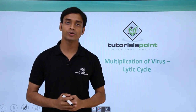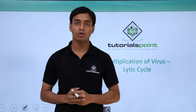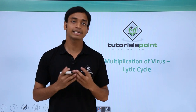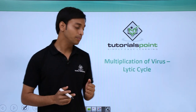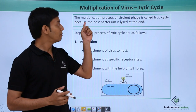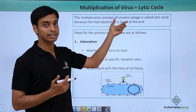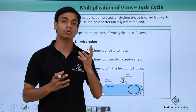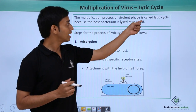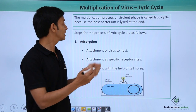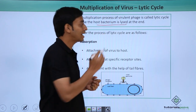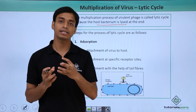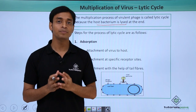Welcome to Tutorials Point. In this video we are going to talk about the lytic cycle, or the multiplication of viruses by the lytic cycle. The multiplication process in the lytic cycle is carried out mostly by virulent phages, which can create lysis of the cell wall and do not integrate into the host genome. It is called the lytic cycle because the host bacterium is lysed at the end, its cell wall is ruptured, and new virus particles are released.